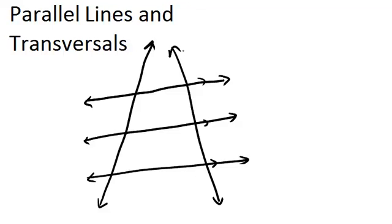then it will always be the case that the segments that are created by the parallel lines and the transversal will be proportional to each other. So for example, if our segments, this segment was A, this was B, this was C, and this was D, it will always be the case that A over B will be in the same ratio as C over D.